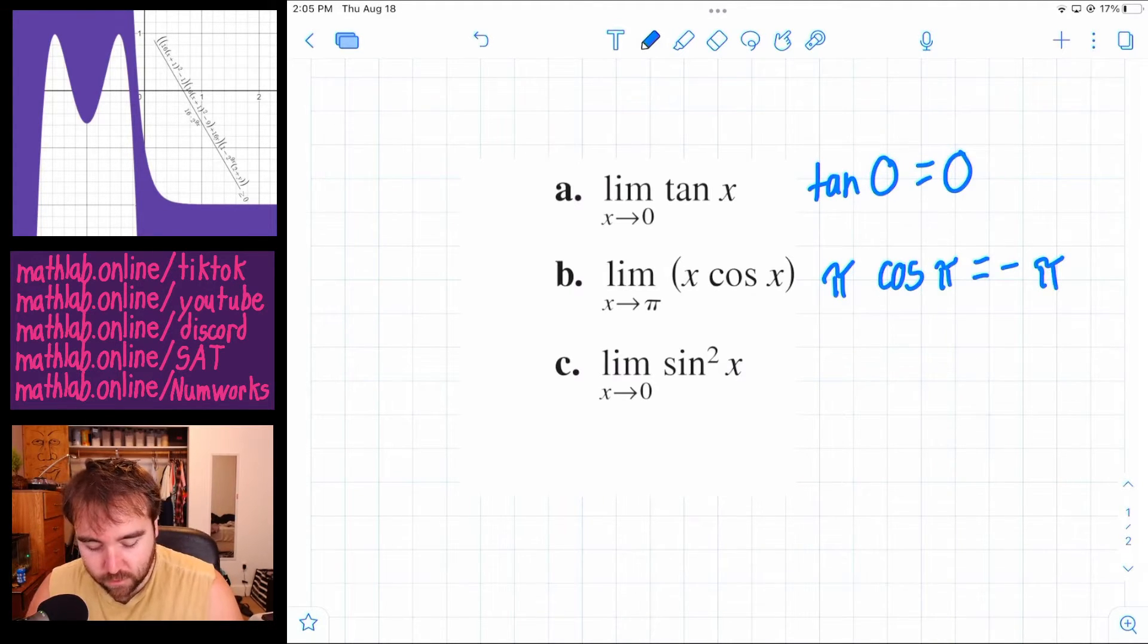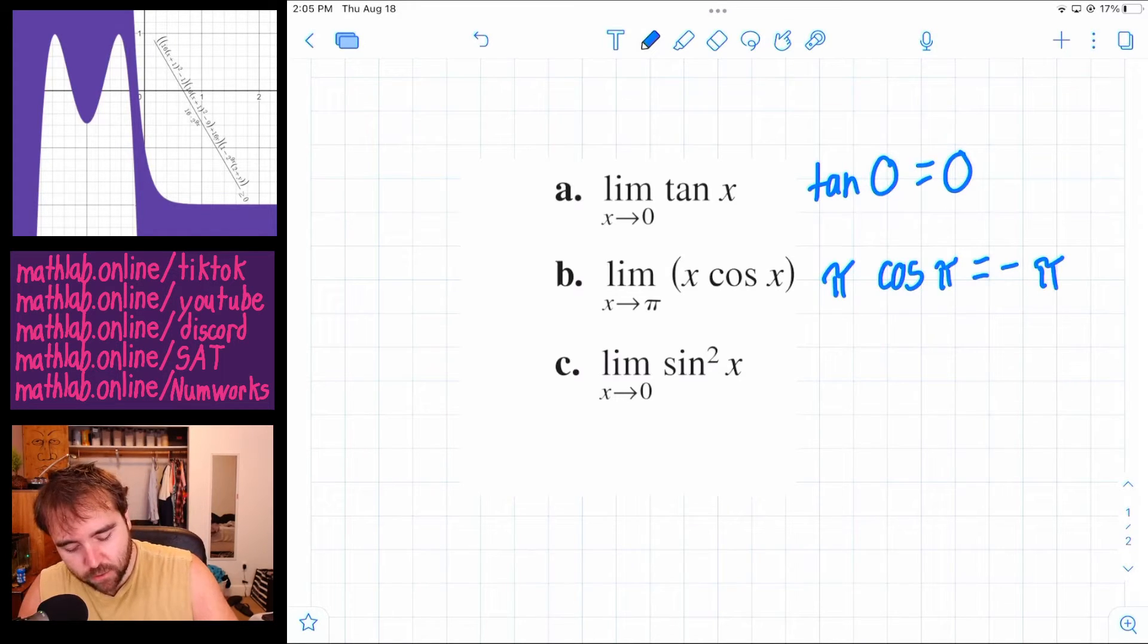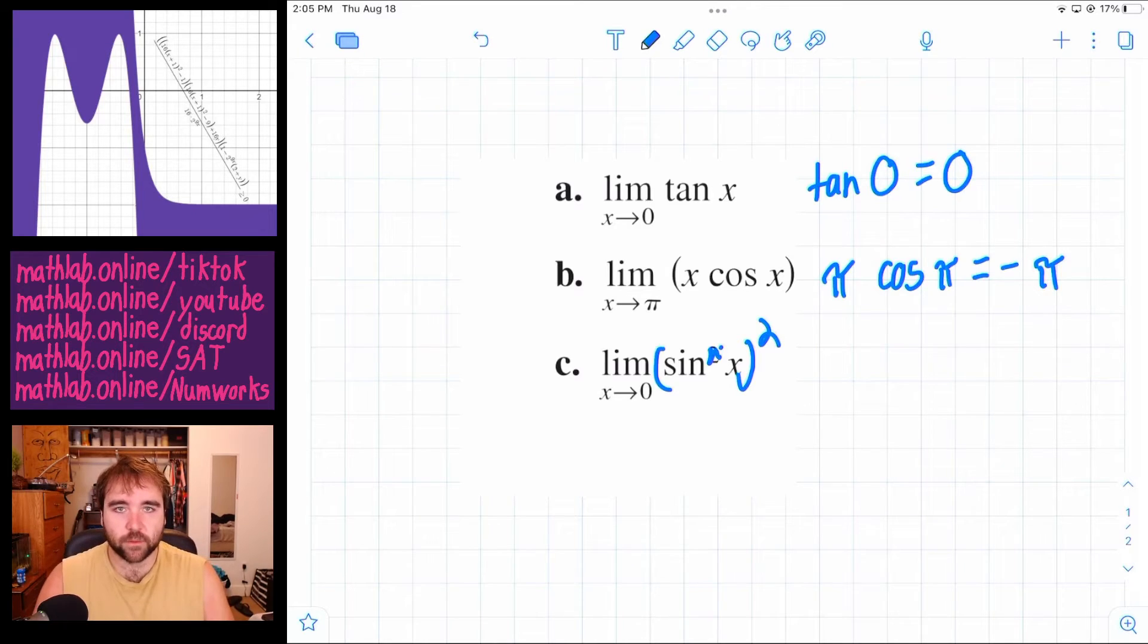And then c, well the sine of 0 is 0. Remember that squared notation, that's the same thing as saying this. That's just a different notation way that people like to write it. So we plug in 0, sine of 0 is 0, and 0 squared is 0. So this equals 0.